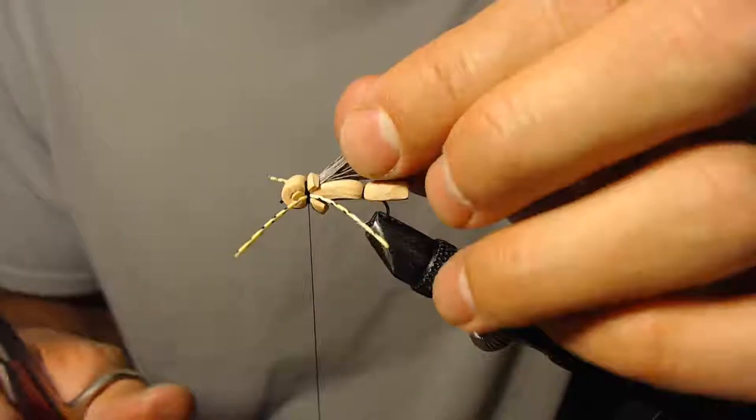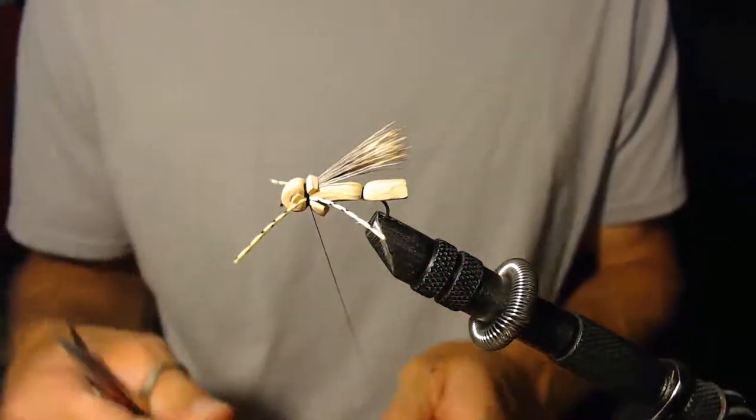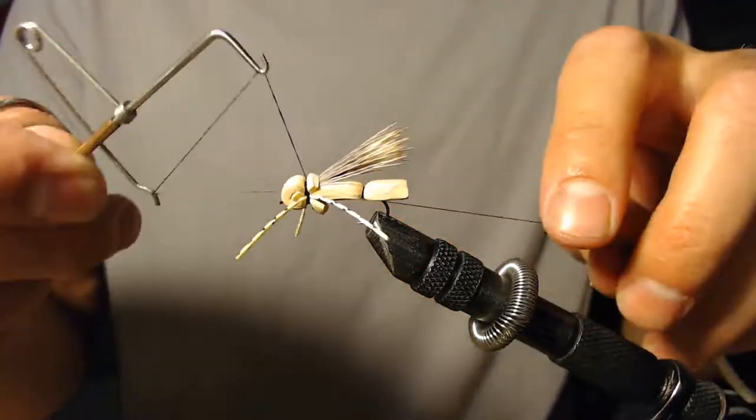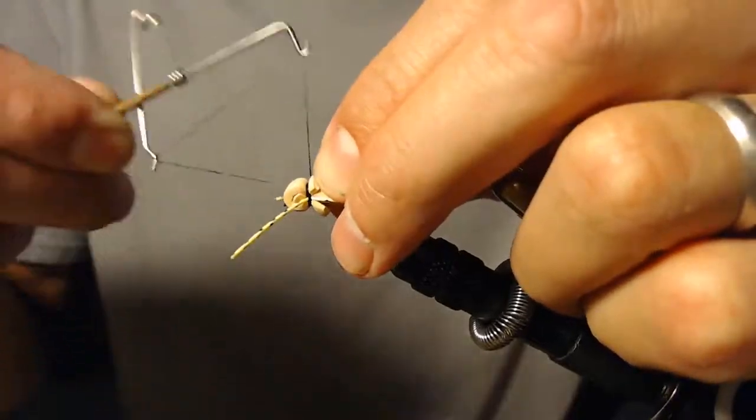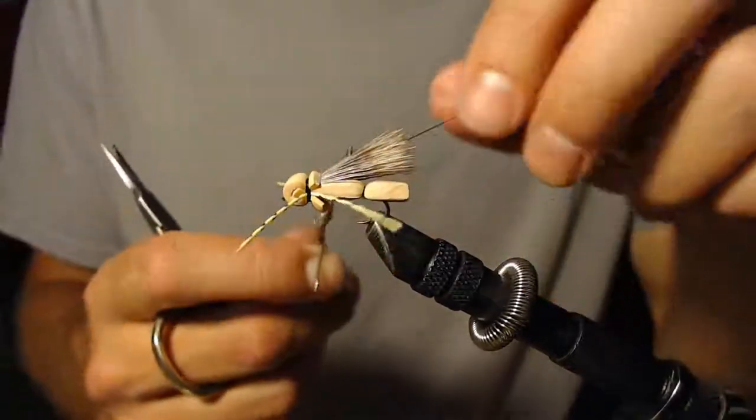Okay, now that's kind of the end of the fly, so we're going to whip finish it and we've got a little bit of trimming and fixing to do. Alright, put the whip finisher on there and whip finish right over the same spot. You get a lot of thread buildup in this one spot.